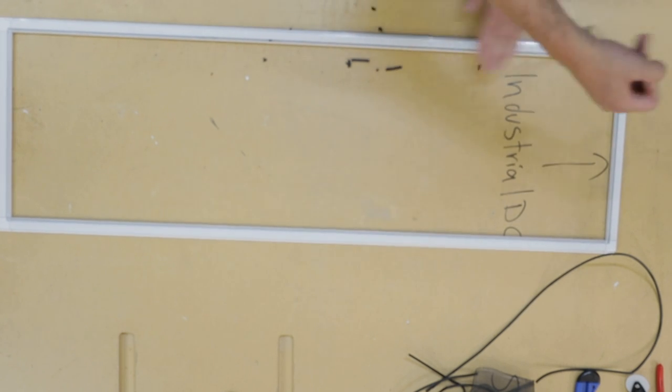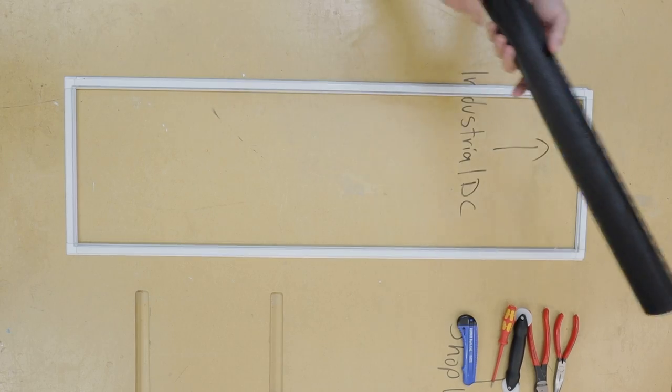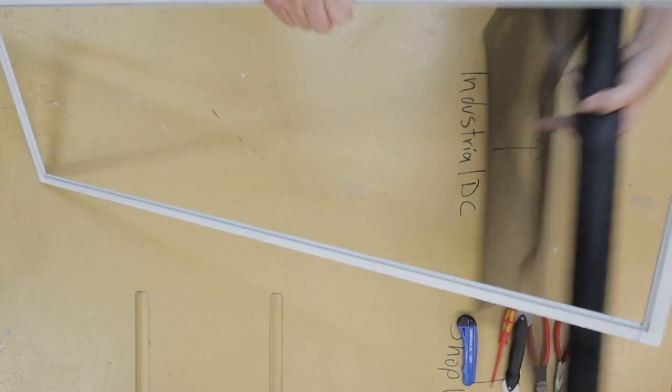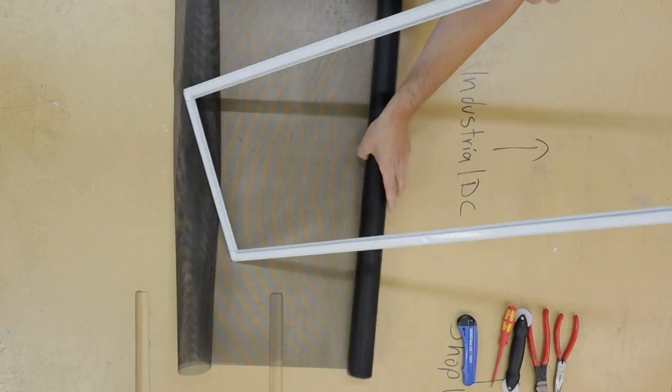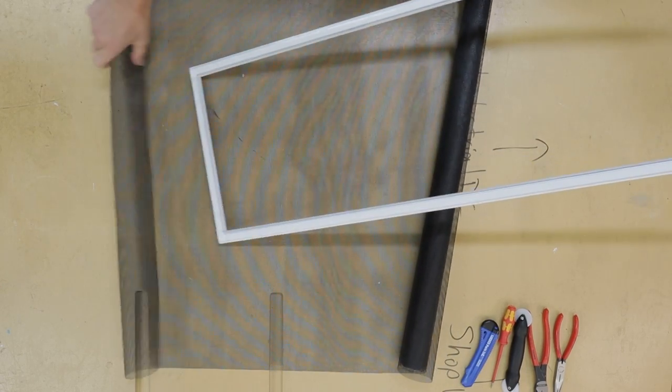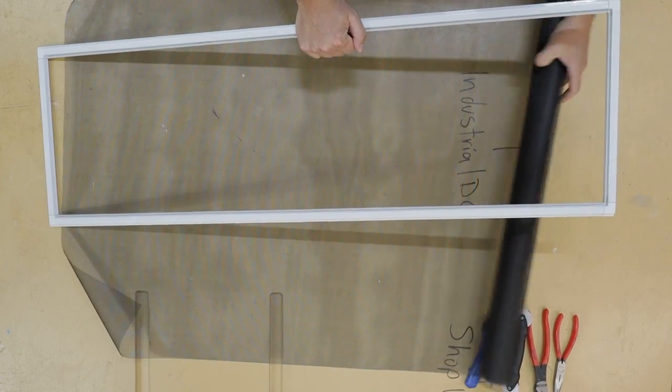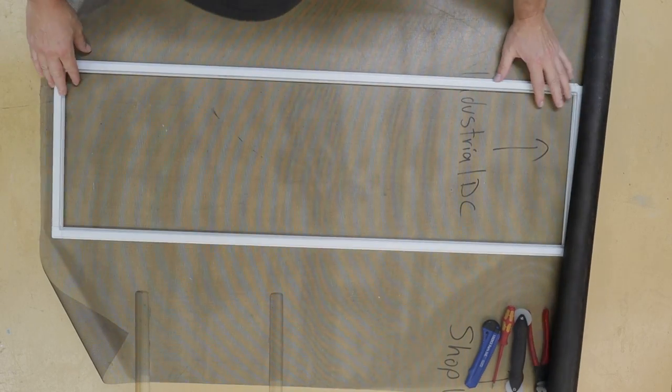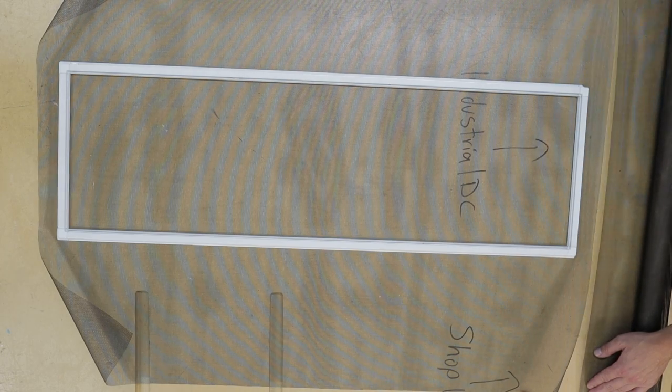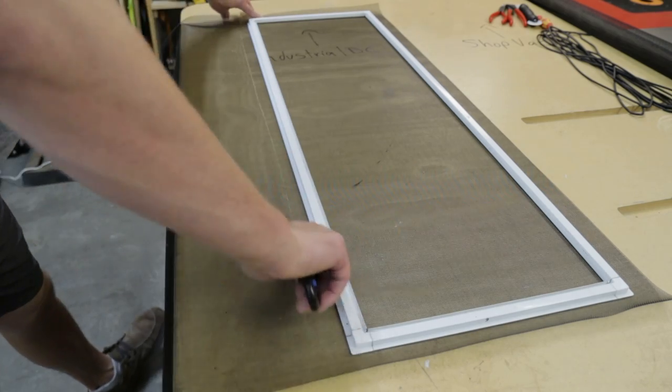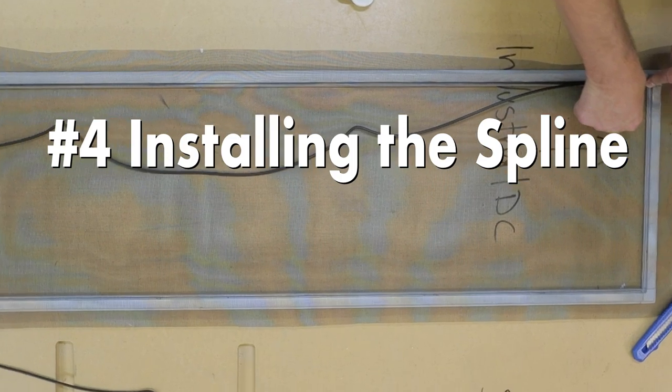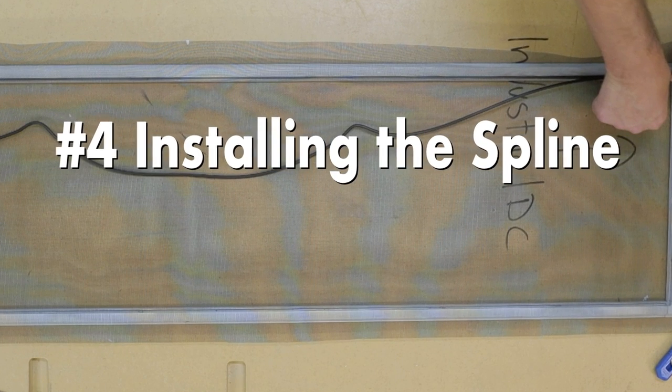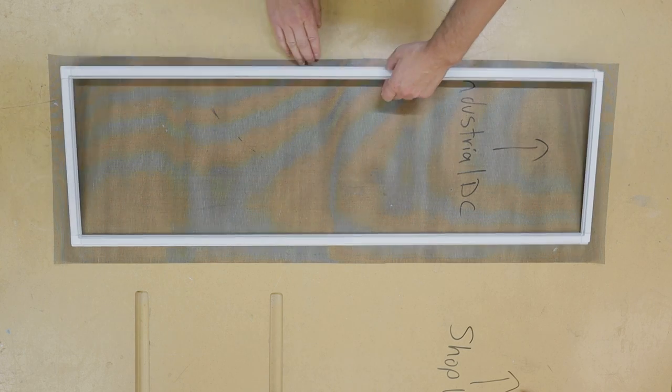The next thing we're gonna want to do is cut the screen to size. To do that, we're gonna need a nice flat, clean work surface that we can cut on with the exacto knife. Roll out the screen, then throw the frame over top and go ahead and cut that about one inch over side on all of the sides.